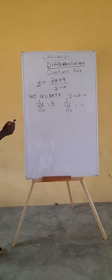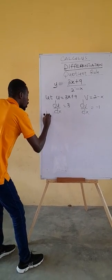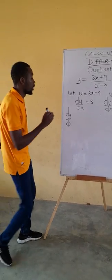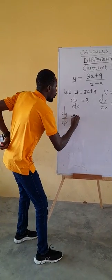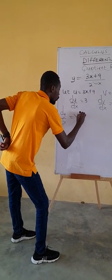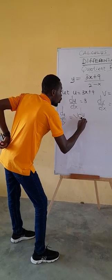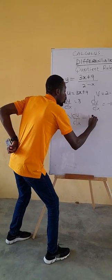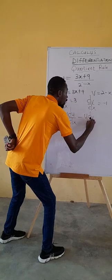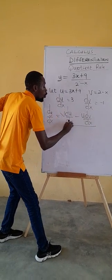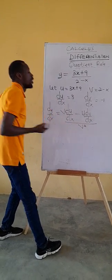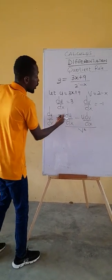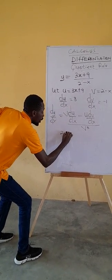So after finding the derivatives, we apply the quotient rule to say that d/dx will be equal to v times du/dx minus u times dv/dx, all over v squared. In this case v is 2 minus x,